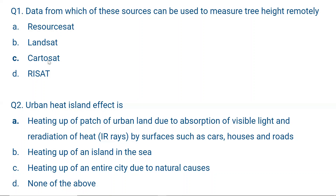ResourceSat is an environmental satellite from ISRO, Indian Space Research Organization. It has three electro-optical cameras for integrated land and water resource management. It is used in forest mapping, infrastructure development, disaster management, crop yield estimation, and snow and glacier studies. But it cannot be used to measure tree height.